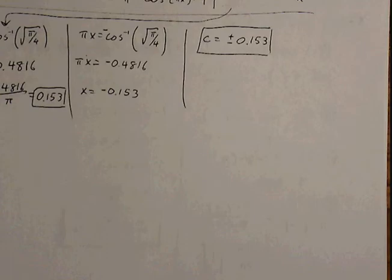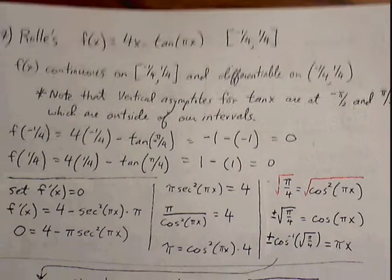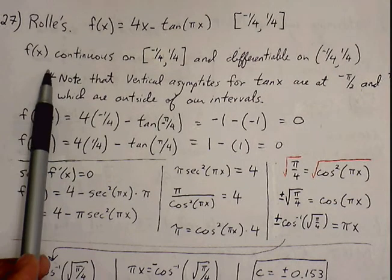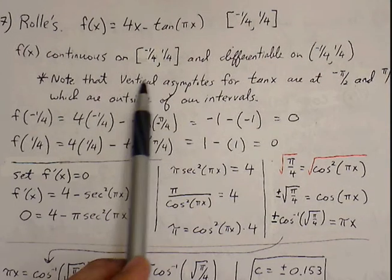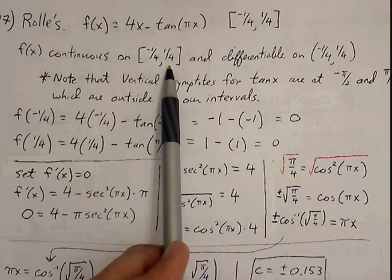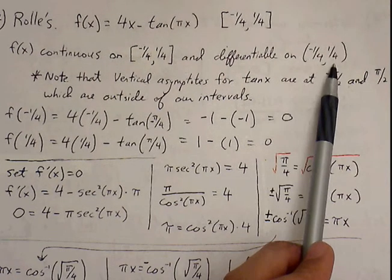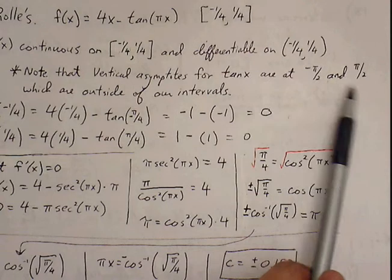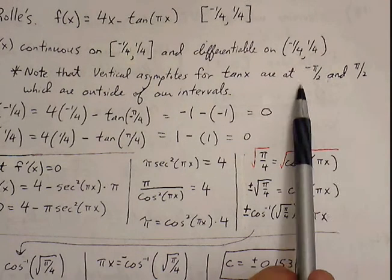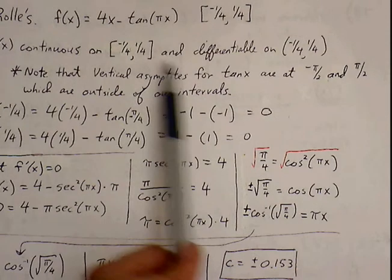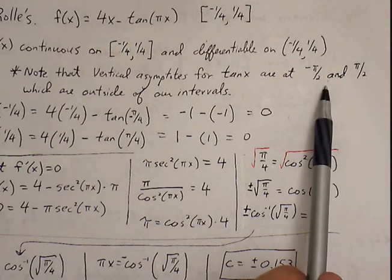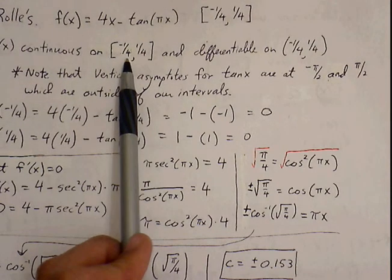Let's go through number 27: f(x) equals 4x minus tangent of pi x. We want to see if Rolle's Theorem applies. Our function is going to be continuous on the closed interval from negative one-fourth to one-fourth, and also differentiable on the open interval. Note that vertical asymptotes exist for tangent of x, but they occur at negative pi over 2 and pi over 2 — these x values are outside our closed interval of negative one-fourth to one-fourth, so our interval is not affected by the asymptotes.